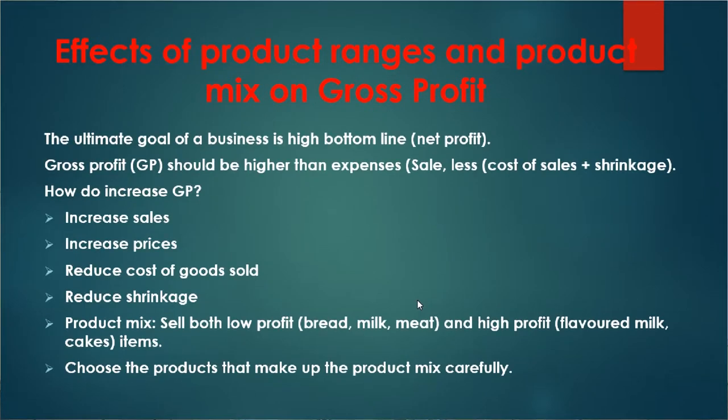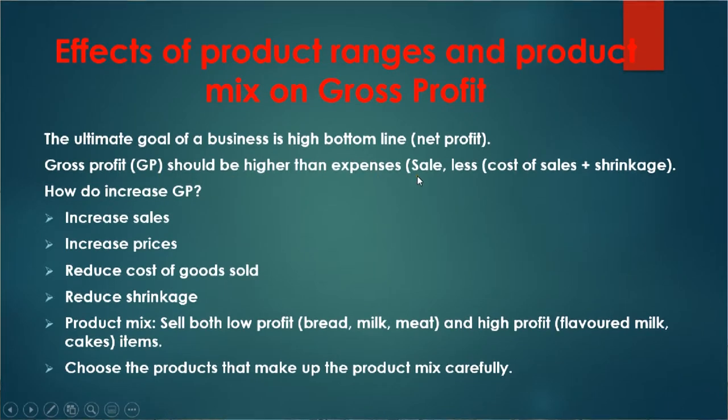Now let's look at the effects of product range and product mix on gross profit. Every business wants to make a profit — that's the reason why businesses are established. The gross profit should be higher than the expenses, because you are going to use the gross profit to pay for the expenses you incur, including salaries, electricity, water, cleaning, and many other things. The gross profit must be big enough to pay those expenses and still leave some net profit.